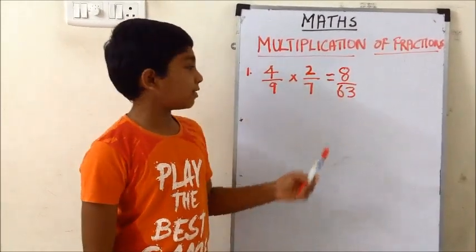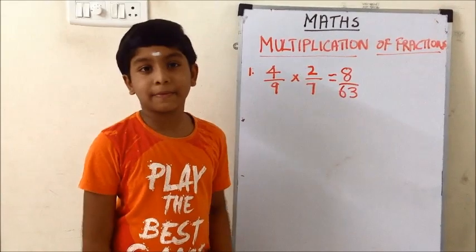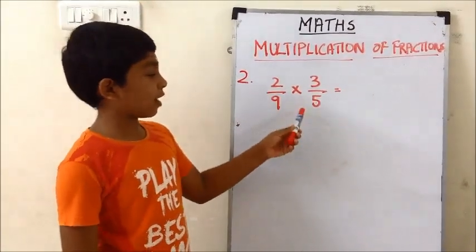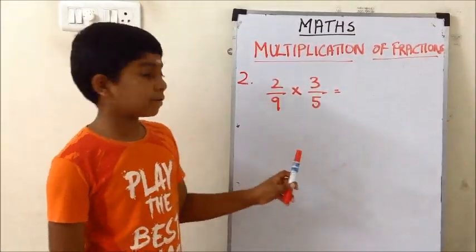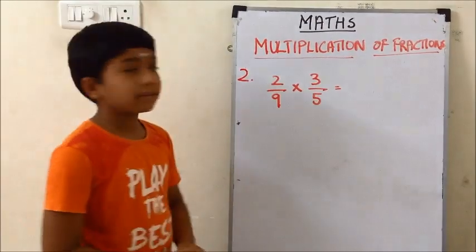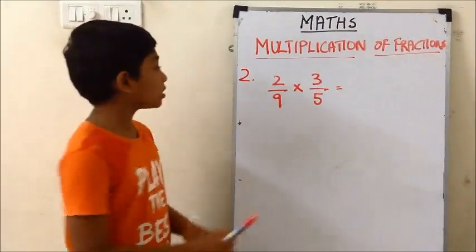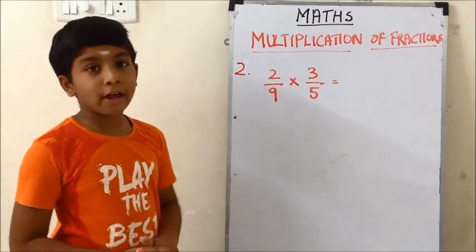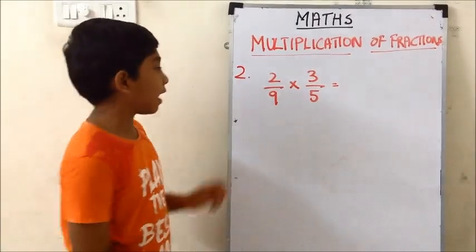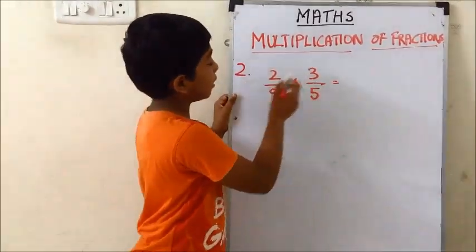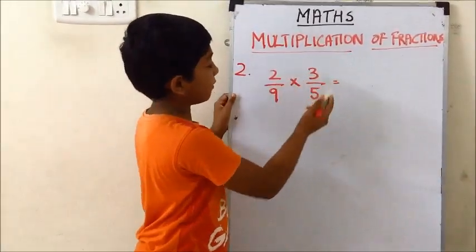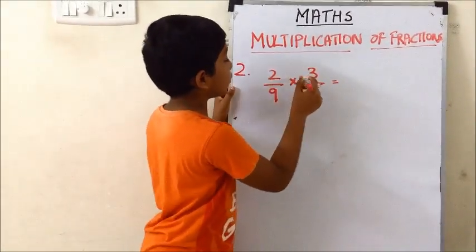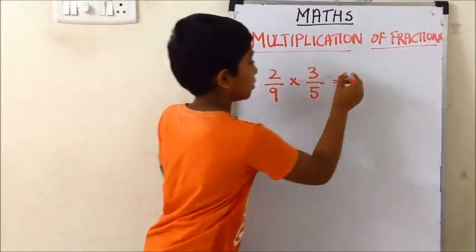Now we will see another example. I have taken another fraction for simplifying. The fraction is 2/9 into 3/5. First we can simply multiply the numerator: 2 into 3 is equal to 6.